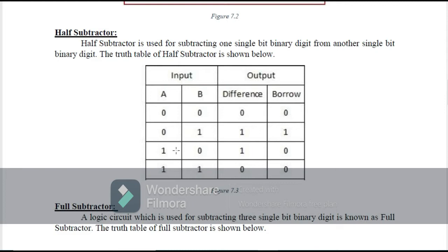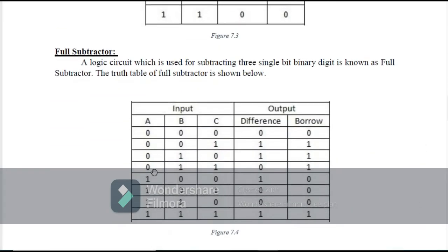When we have the input 1,0 the difference is 1 and borrow is 0 because we do not have to take a borrow. When we have the input 1,1 the difference is 0 and borrow is 0 because 1 minus 1 is 0. After this we have a full subtractor.